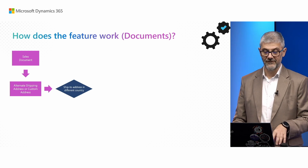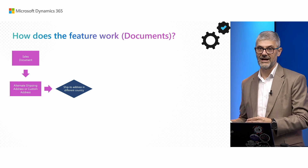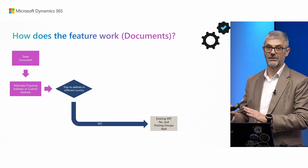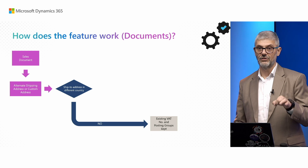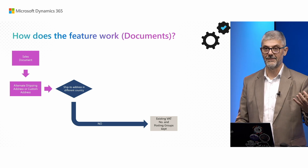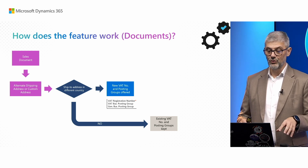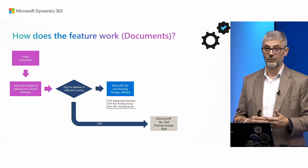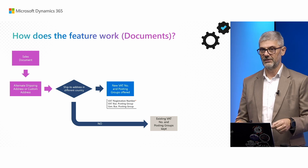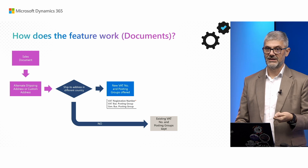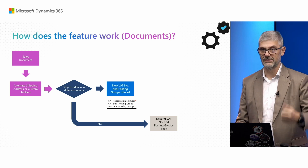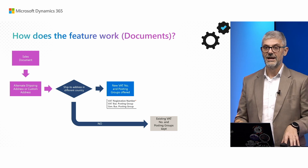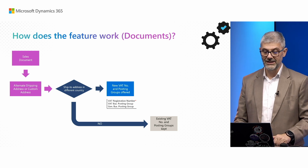The system will again check if the ship-to address is in a different country. If not, business as usual — nothing will be changed and the existing VAT number and posting groups will be kept. But if your ship-to address — whether from an alternative or custom address — is different, the system will use the new VAT number from your configuration, and the same applies for posting groups if configured. If you did not configure them, you will still get a notification that you do not have a VAT registration for this country, and you can create a new configuration there.